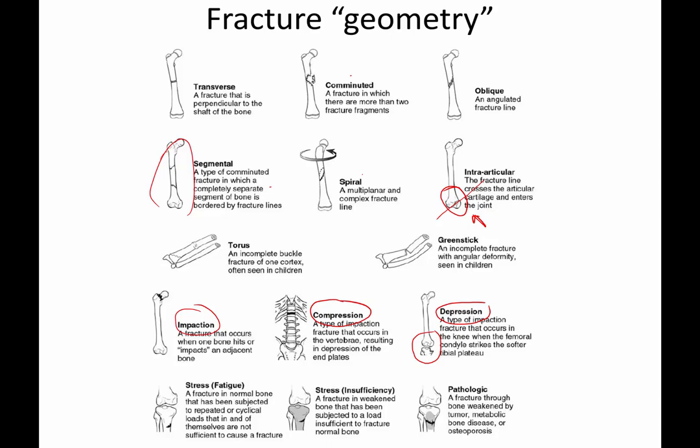A stress fracture occurs when either normal bone has been overloaded and stressed, or abnormal bone fails because it's weak — it can occur with no trauma. A pathologic fracture, which we'll discuss in another video, is a fracture through bone weakened by tumor. And there are two pediatric fracture types: a buckle fracture and a greenstick fracture — where you have tension failure on one side, but the other side does not snap.